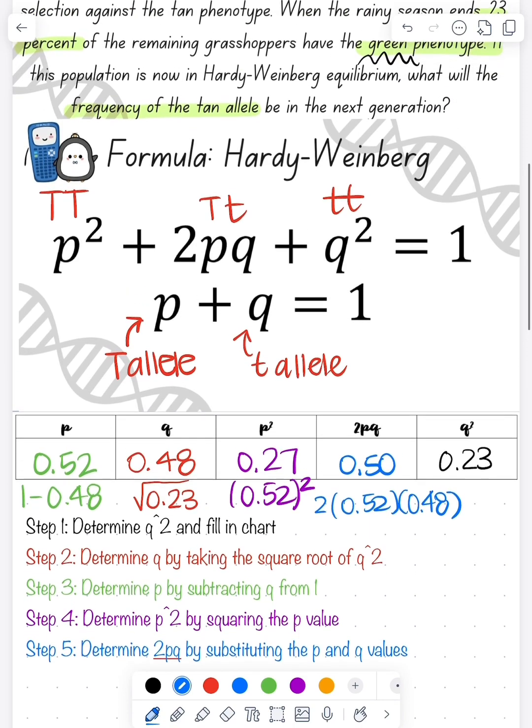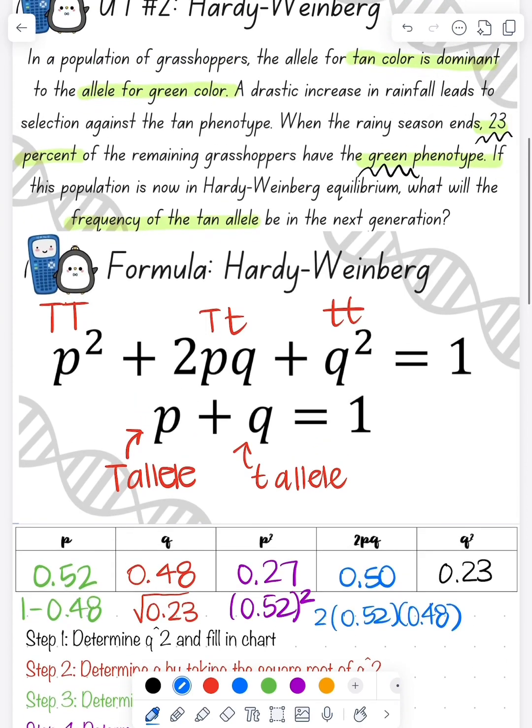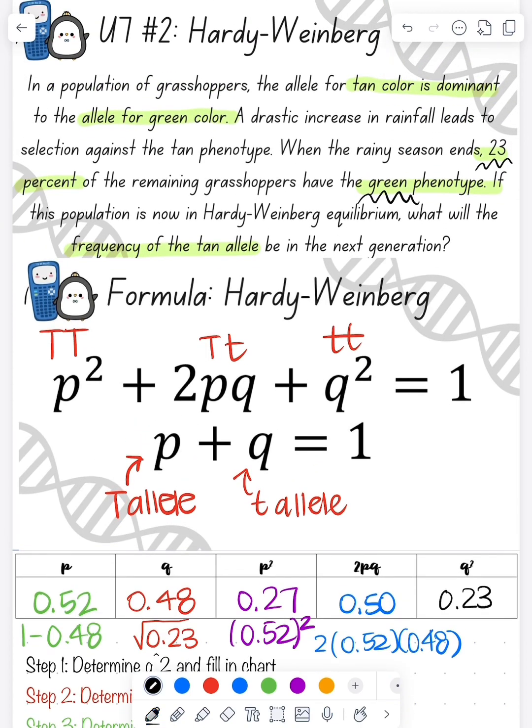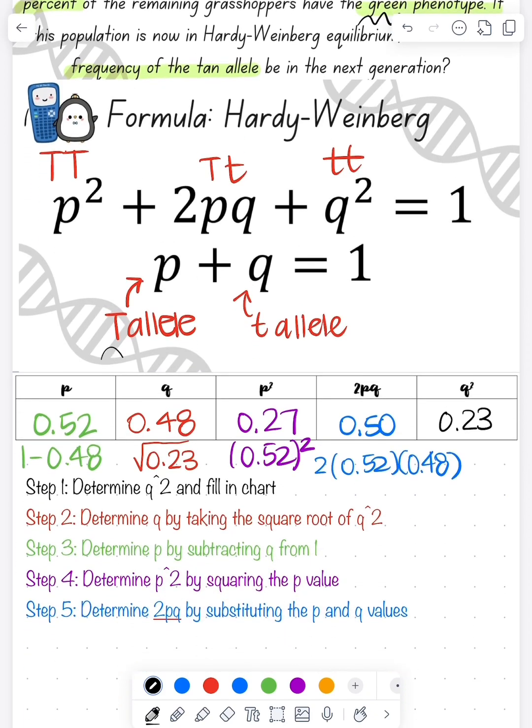Now we've filled in our chart, we need to go back to the question and confirm. We know that tan is going to be dominant to green. Since I'm looking for the frequency of the tan allele, that's going to be our p value.